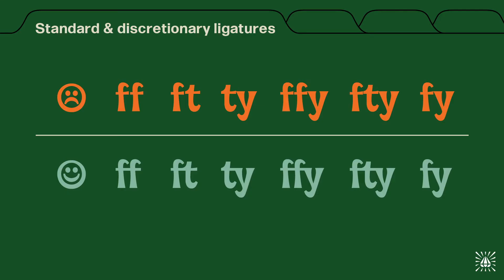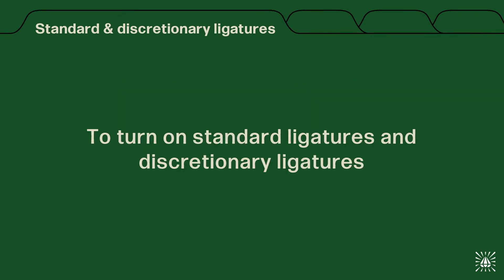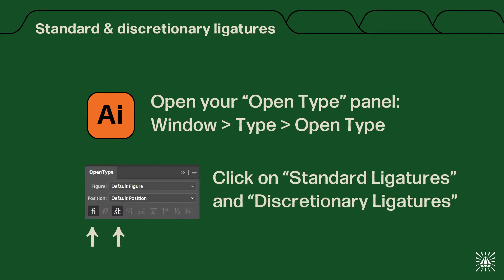Standard ligatures found in many fonts often include the lowercase f. See here how the repeated lowercase f looks not so great? We created an ff standard ligature glyph to be used in those scenarios. To turn on standard and discretionary ligatures, in Adobe Illustrator, open your OpenType panel by going to Window, Type, OpenType, then click on the standard and discretionary ligatures icons at the bottom of the panel.